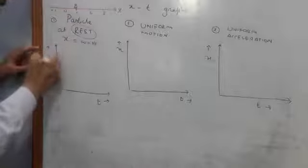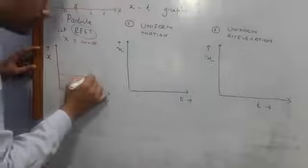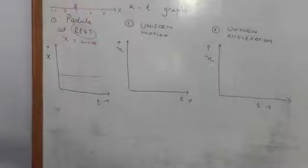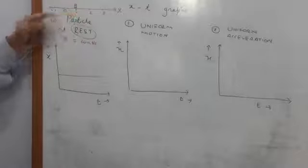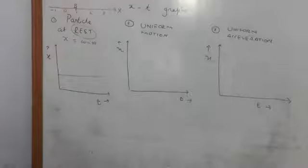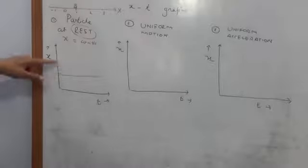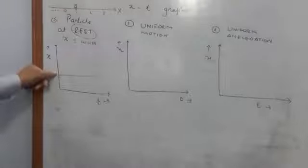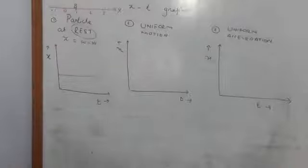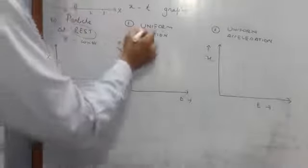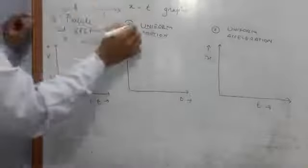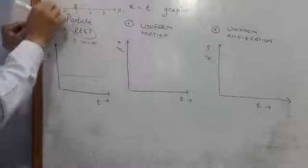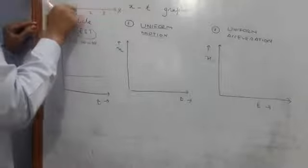If you have recalled what we discussed in the graph section, when a parameter is constant the nature of the graph is a straight line parallel to the time axis. So we draw the graph like this — since the position was x equal to 1, we draw it at x equal to 1. In general, for a particle at rest, the position-time graph will be a straight line parallel to the time axis. Next is uniform motion. Uniform motion is motion along a straight path where both the direction and magnitude of velocity remain the same — that is, velocity is constant.